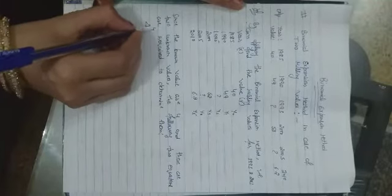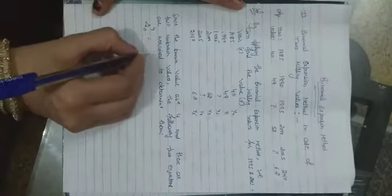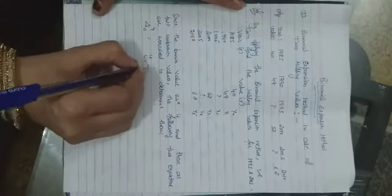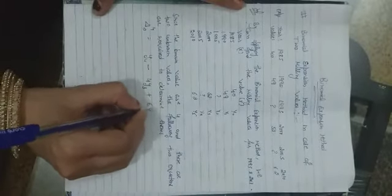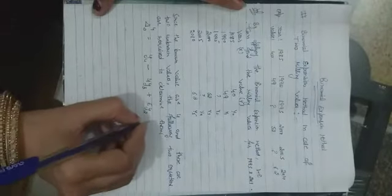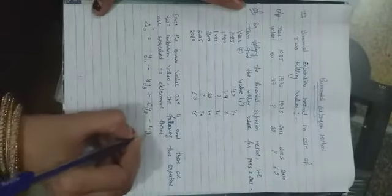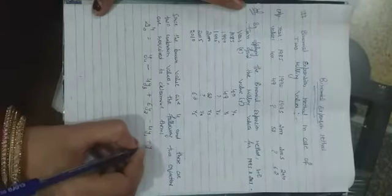Delta^4(0) is equal to y4 minus 4y3 plus 6y2 minus 4y1 plus y0 is equal to 0.